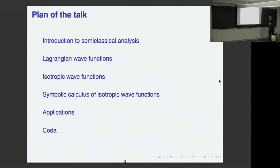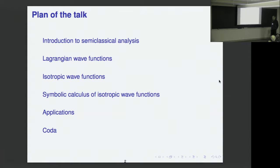I will talk about Lagrangian wave functions. These are H-bar-dependent functions associated to Lagrangian submanifolds. That subject is more or less well-established. I will then talk about how to extend that to isotropic wave functions. Their symbol calculus is more complicated than in the Lagrangian case — quite a bit more complicated. And then I will try to sketch some applications, and if there is time there will be a coda, which is not on the slides.